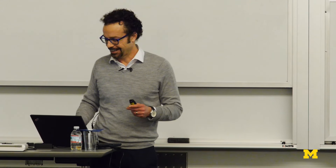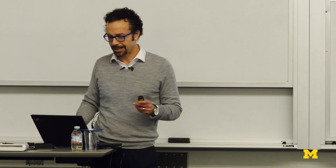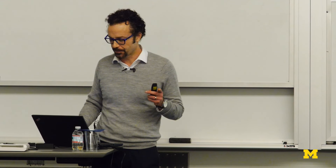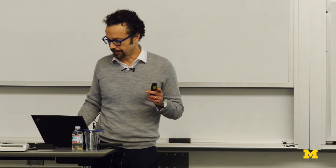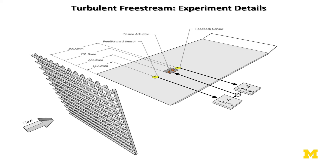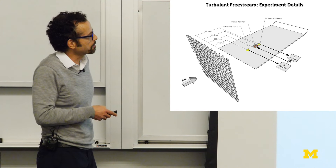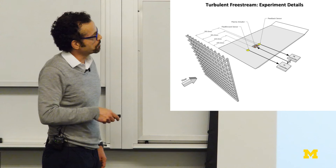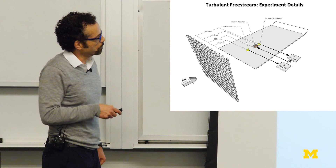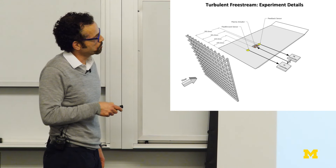Now we move to the work done at Imperial College, where we put a grid in the free stream of the wind tunnel to generate real free stream turbulence. We are doing local control here for economy of experiments — a single upstream sensor and a single downstream sensor.